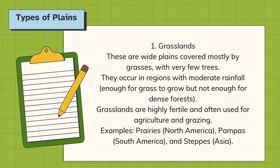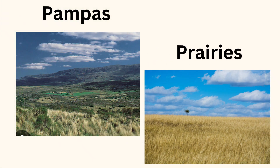We call grasslands different names in different countries. In North America we call them prairies. In South America we call them pampas. Another name is savannah — used in many countries such as North America and Australia. We also call them steppes. So grasslands are wide plain areas mostly covered with grasses, with very few trees and no dense forest. These pictures indicate pampas and prairies, which are types of grasslands.